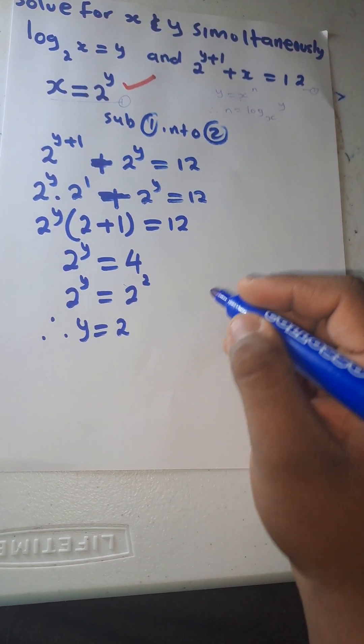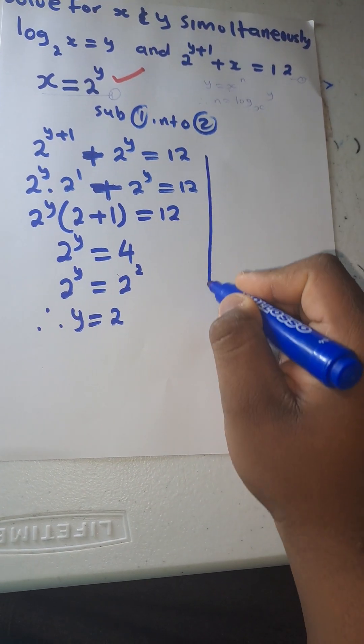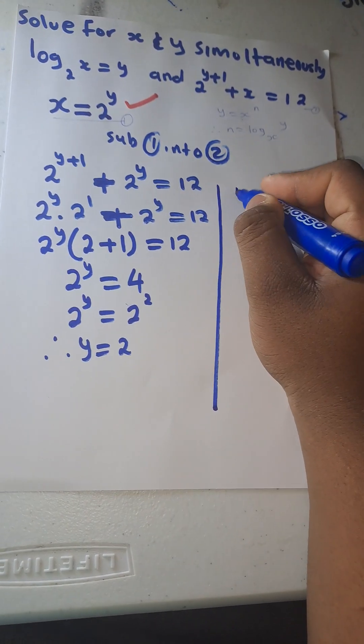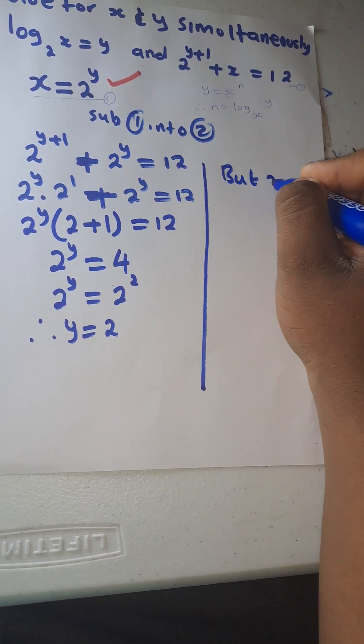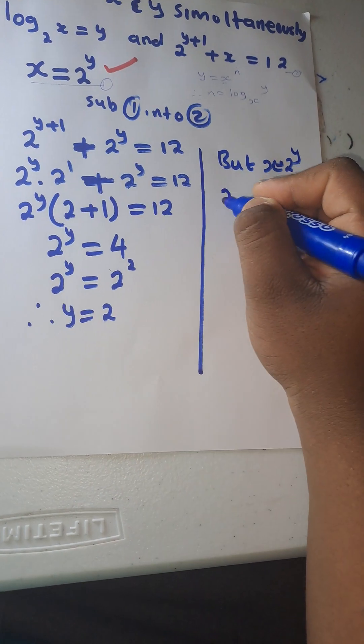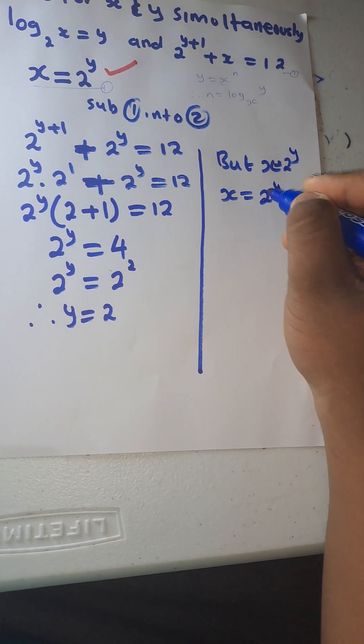So now since you got our y value, let's calculate the x value. But x is equals to 2 to the power of y. X equals to 2 to the power of 2.